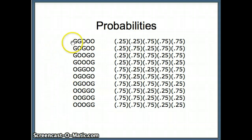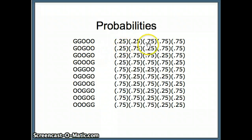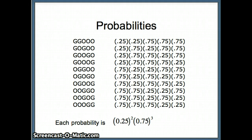Here are our probabilities. If it goes green, green, other, other, other: the probability of green is 0.25, and each other is 0.75. You'll notice in each case there are two greens and three others. Each green is 0.25, each other is 0.75. So we have two greens — 0.25 appears twice — and three others — 0.75 appears three times. The probability for each case is 0.25 to the second times 0.75 to the third.